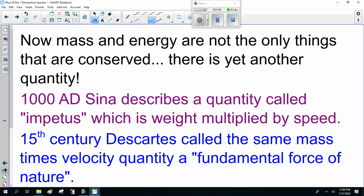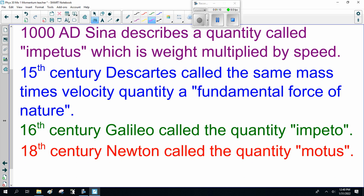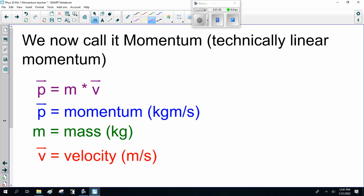In 1000 AD, Sina described a quantity called impetuous, which is weight multiplied by speed. In the 15th century, René Descartes called the same mass times velocity quantity a fundamental force of nature. In the 16th century, Galileo called the quantity impetio. In the 18th century, Newton called the quantity motus. We now call it momentum, technically linear momentum.